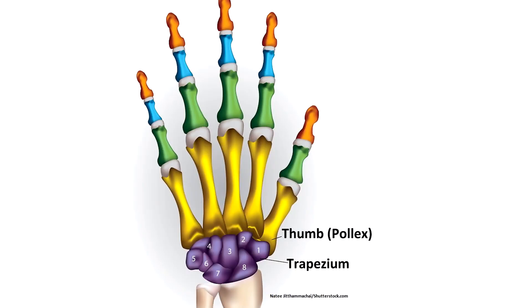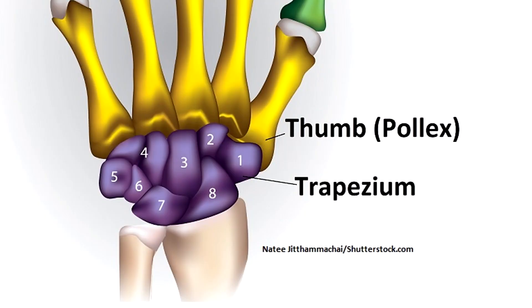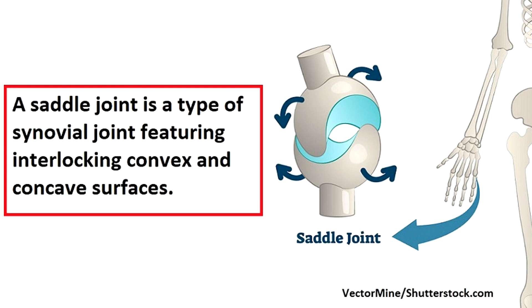Now the thumb articulates or forms a joint with the trapezium bone of the wrist via a saddle joint, a type of synovial joint featuring interlocking convex and concave surfaces. And they call it a saddle joint because it looks like a saddle. Saddle up, cowboy. Yeehaw.